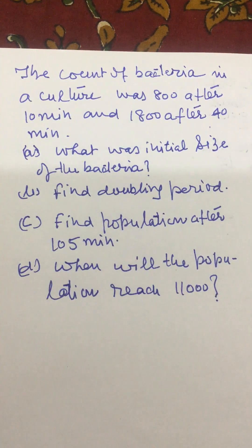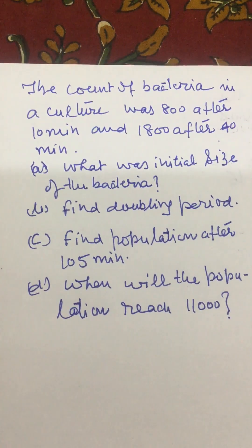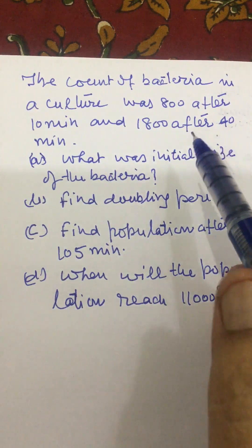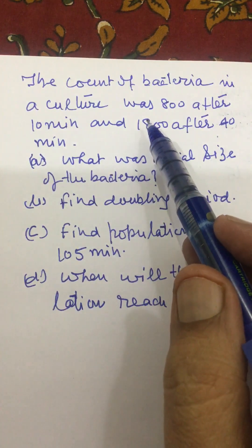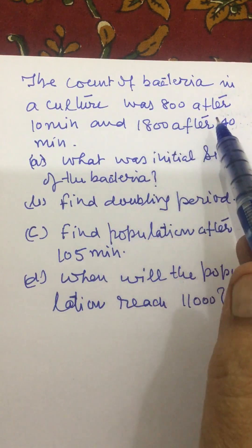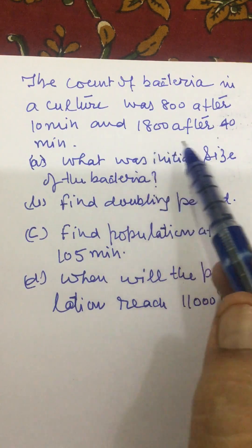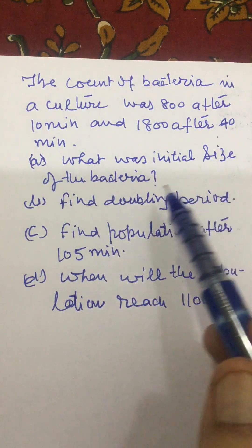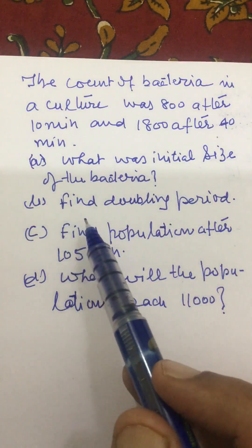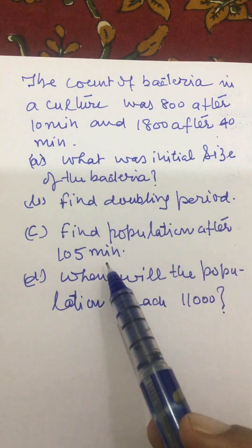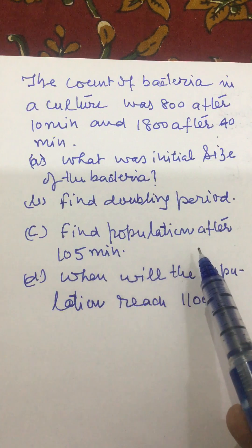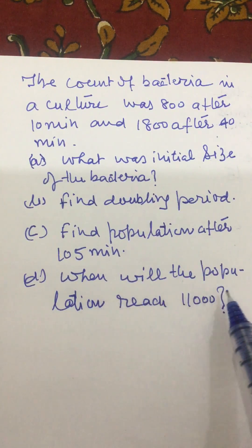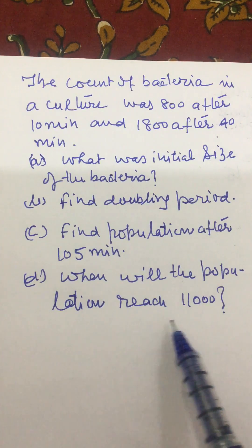Dear friends, welcome to my channel. In this video we will solve a problem. The problem is: the count of bacteria in a certain culture was 800 after 10 minutes and 1800 after 40 minutes. Part A is to find the initial size of the bacteria, Part B is to find the doubling period, Part C is to find the population after 105 minutes, and Part D is when will the population reach 11,000.